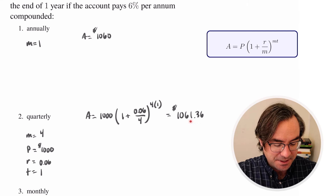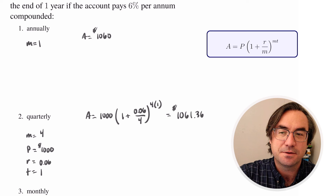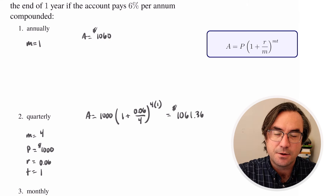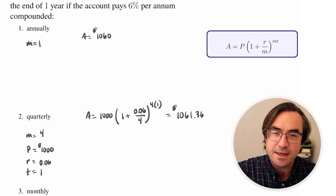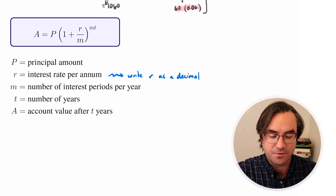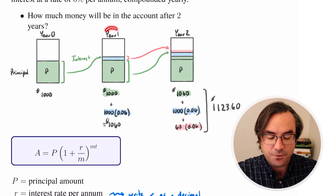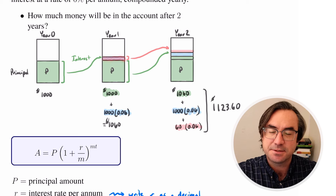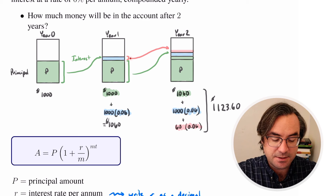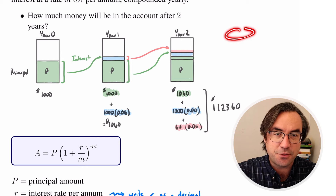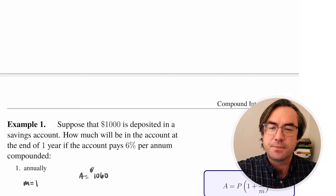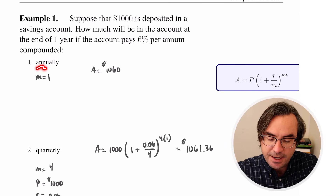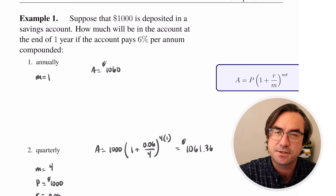Notice this is a little bit bigger than with annual compounding — $1,060 versus $1,061.36 with quarterly compounding. The reason is that after the first quarter, we get an interest payment put into our account, and that little payment starts making its own interest. Then after the second quarter, that interest starts earning its own interest, and so on through the third quarter. Even after just one year, there is a noticeable difference between annual and quarterly compounding — that's the compound interest effect.